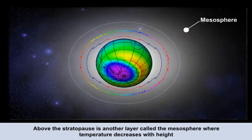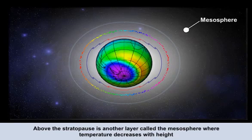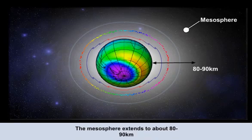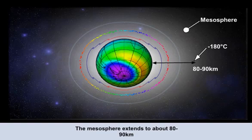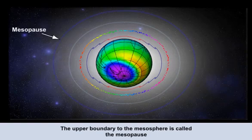Above the stratopause is a much cooler layer where temperature continually decreases with height — called the mesosphere. It usually extends about 80 to 90 kilometres above the Earth's surface. At the top of this layer we have some of the coolest temperatures encountered, sometimes as low as minus 180 degrees Celsius. The upper boundary of the mesosphere is called the mesopause.